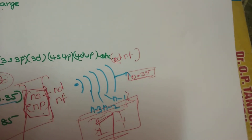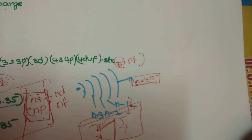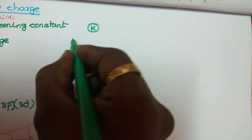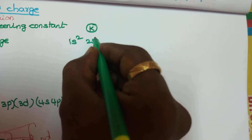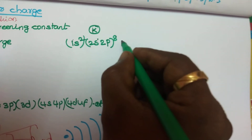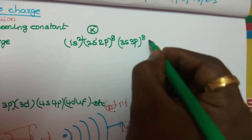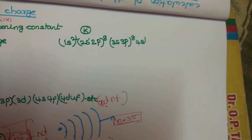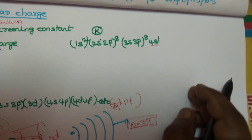Now let's calculate the effective nuclear charge of potassium (atomic number 19) for the 4s¹ electron. First, write the electronic configuration: 1s² | 2s² 2p⁶ | 3s² 3p⁶ | 4s¹. I want to find the effective nuclear charge on the electron present in the 4s subshell.